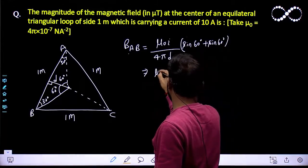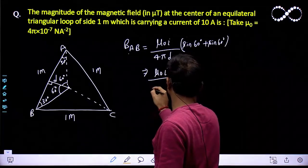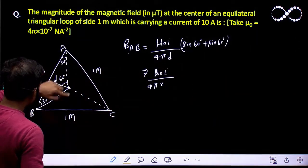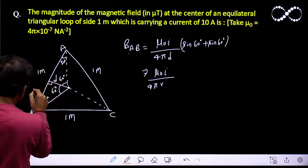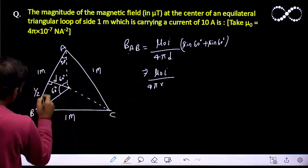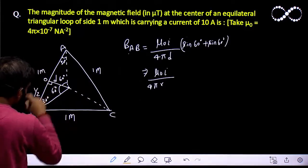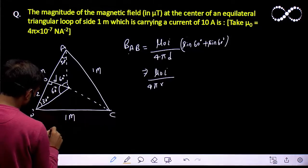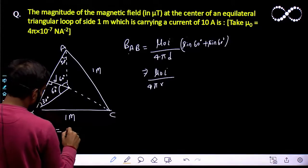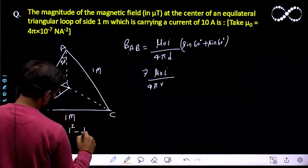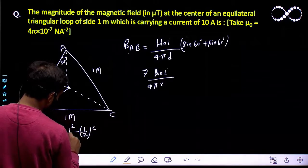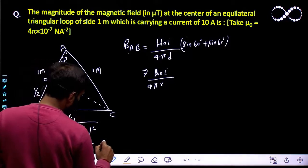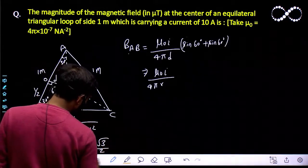So the formula is μ₀I upon 4π times D. I need to find this distance D. This line will behave like a median, so this length is 1/2. Suppose this point is O, so BO is 1/2. In this triangle, OC will be equal to √(1² − (1/2)²) = √(1 − 1/4) = √3/2.